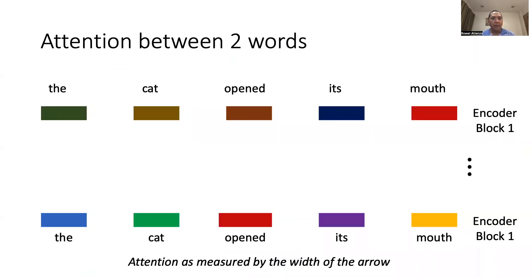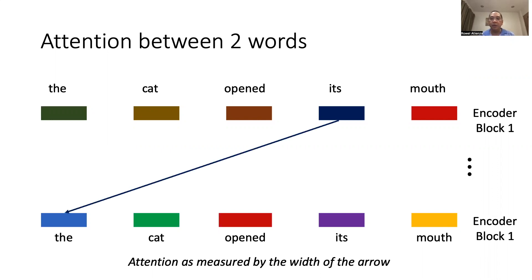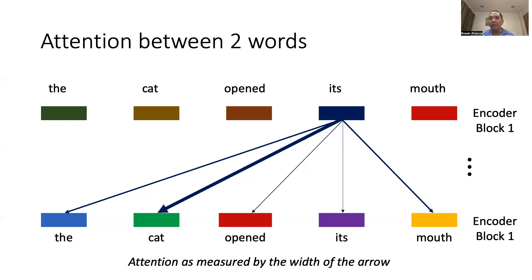What is self-attention? Let us examine the following sequence of words: 'The cat opened its mouth.' Let us focus on the word 'its.' Qualitatively, the word 'its' has attention — a measure of relevance — with other words in the sentence, or in other words, attention with other parts of itself. We use the width of a line to measure relevance. 'Its' and 'the,' 'its' and 'cat,' 'its' and 'opened,' 'its' and 'its,' 'its' and 'mouth.' In this case, 'its' has the strongest attention with the word 'cat.' The goal is to learn this attention weight so that the transformer can formulate the right decisions.